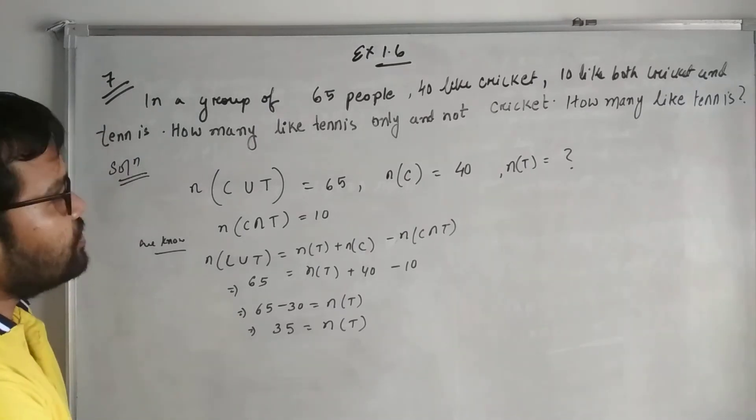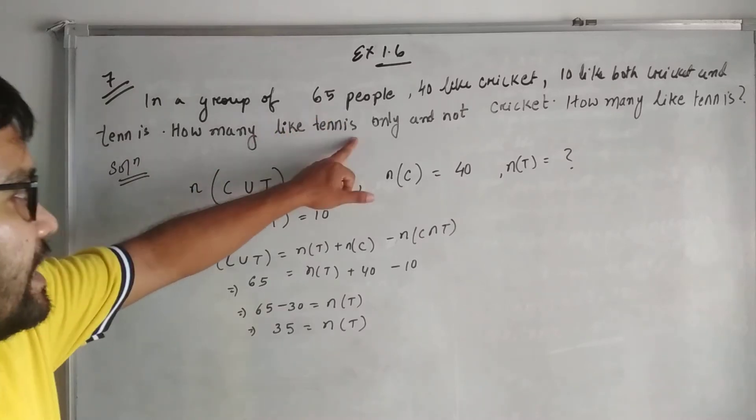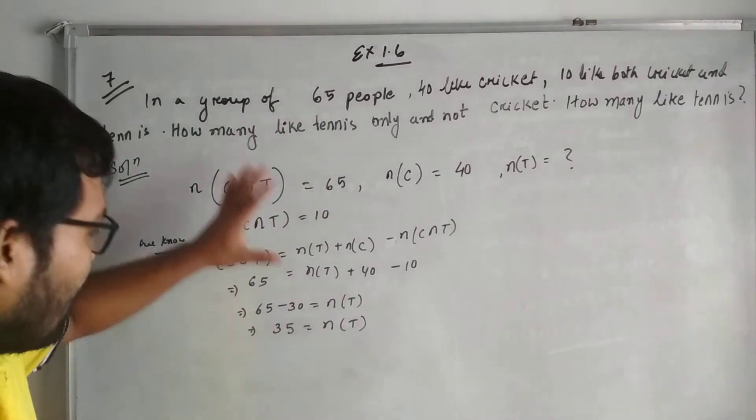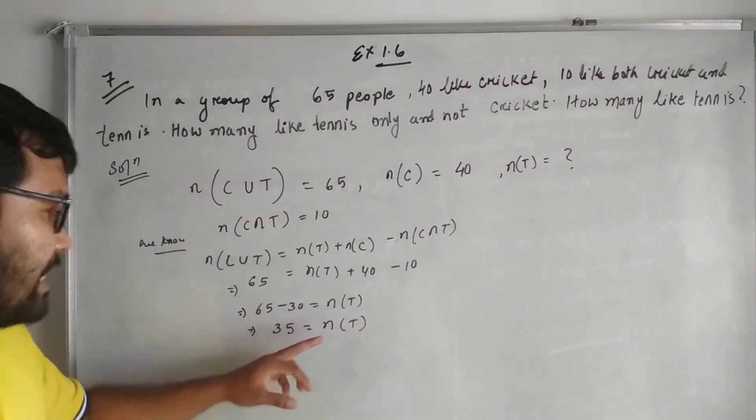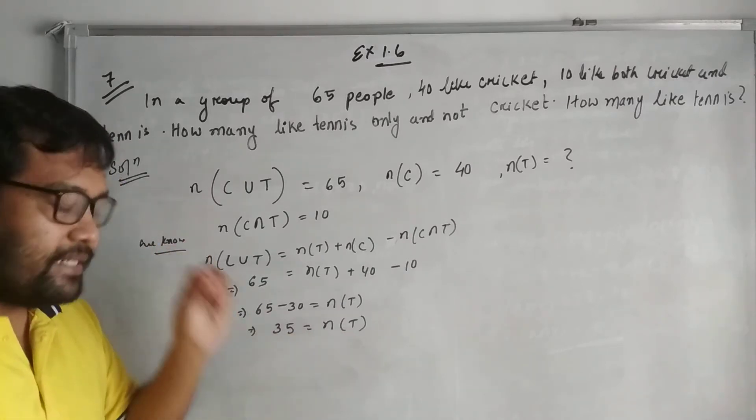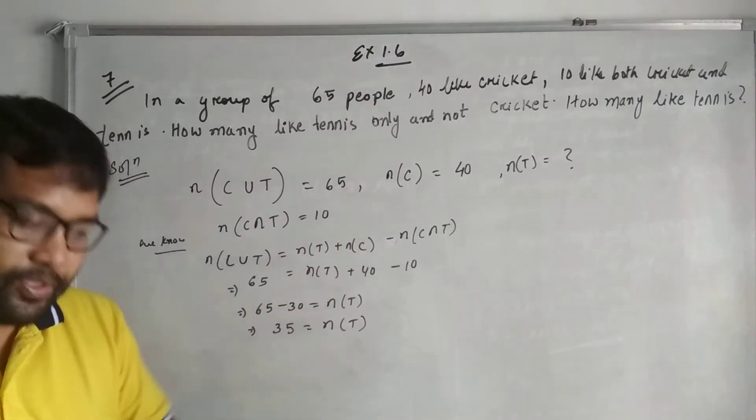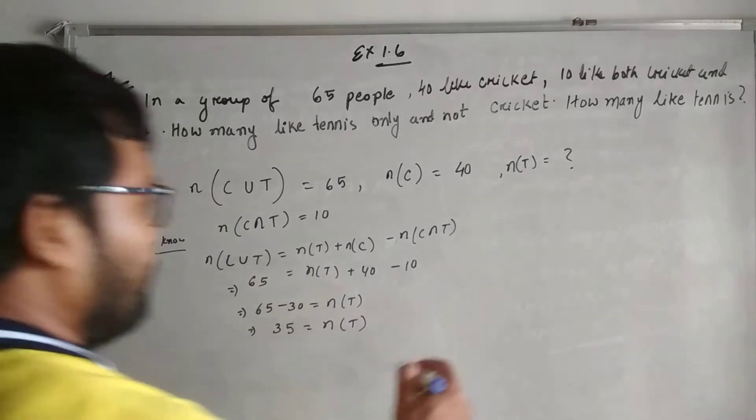Now, one question we have solved. If you observe, how many like tennis only and not cricket? Only tennis. The number of people who like tennis is 35. Here we have people who like tennis as well as some of them like cricket as well - both.